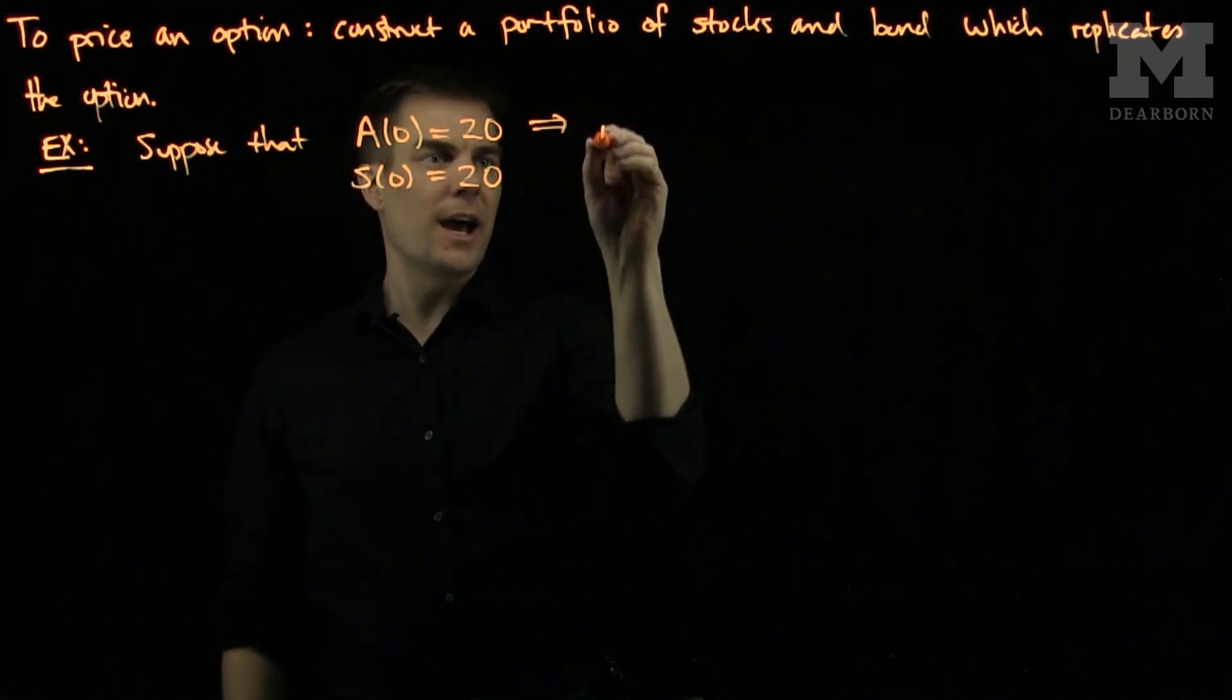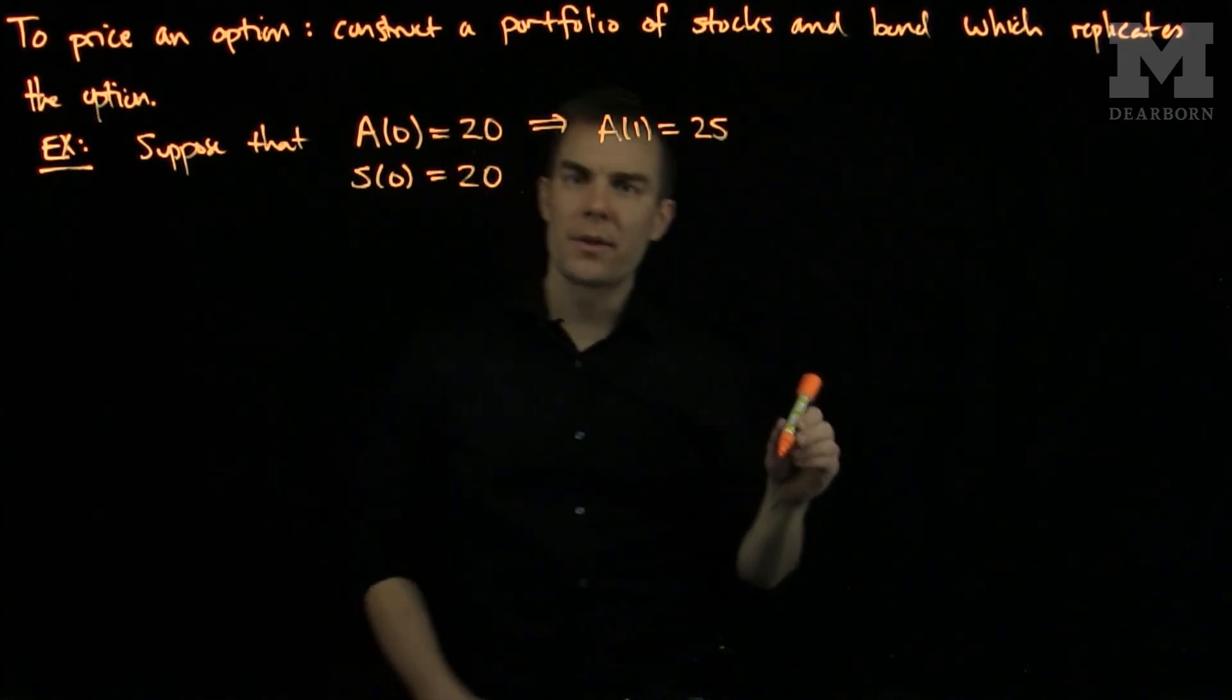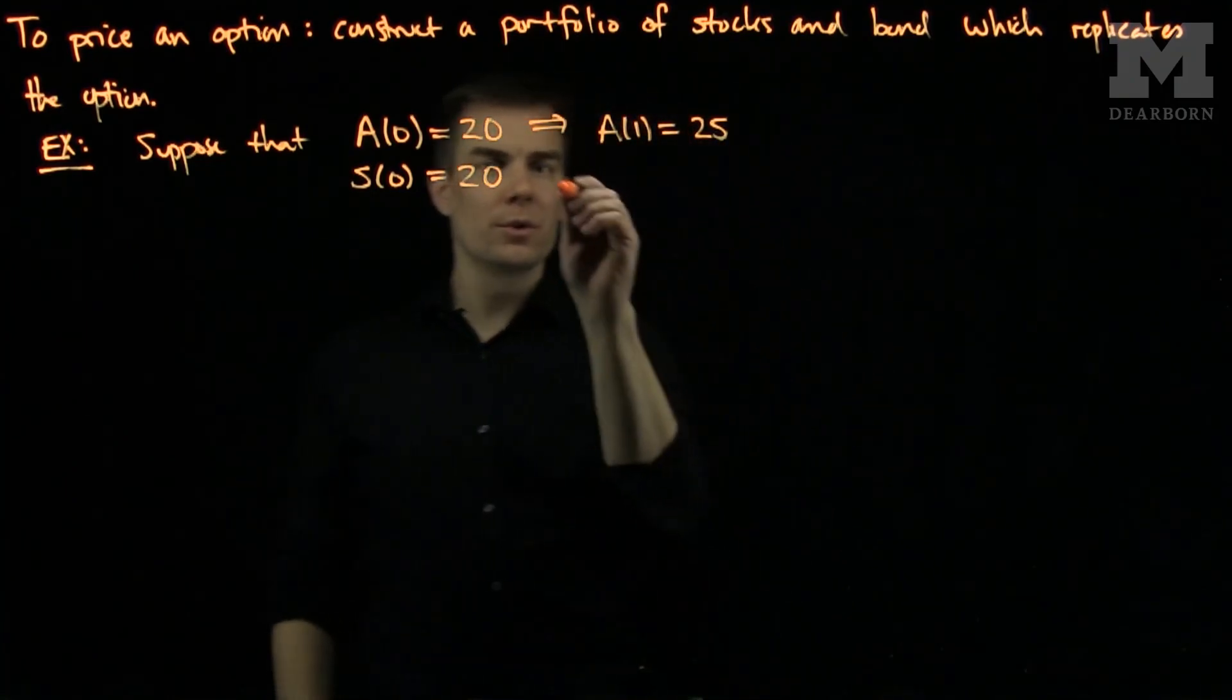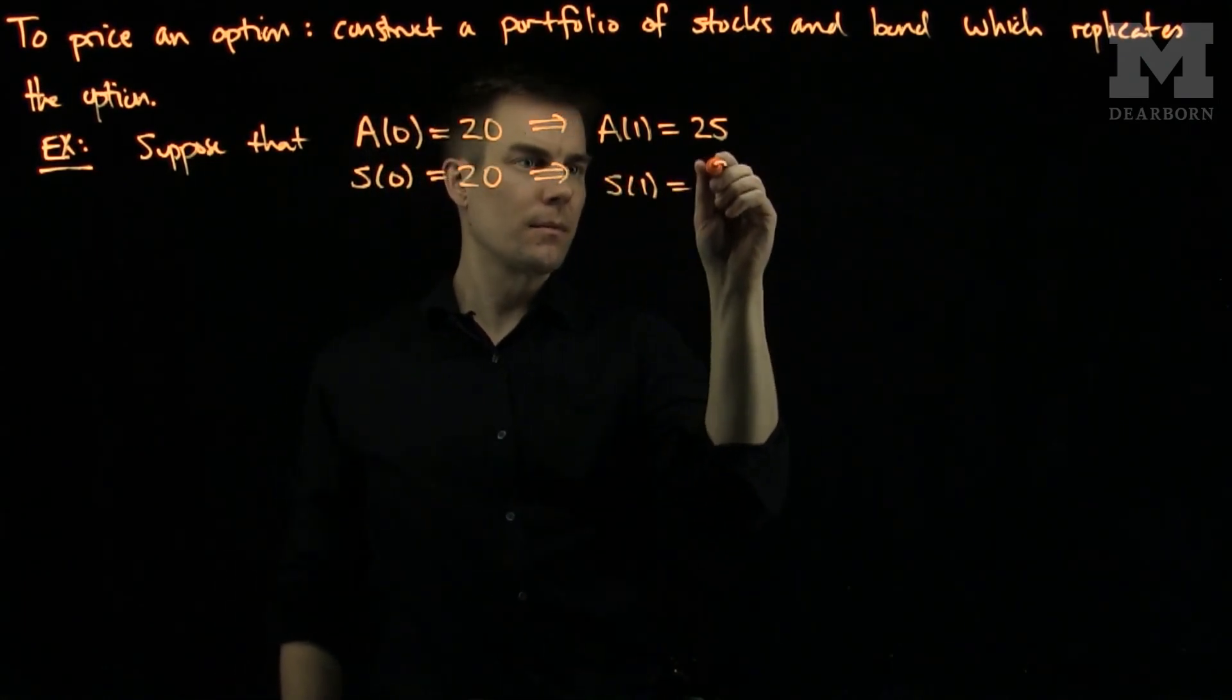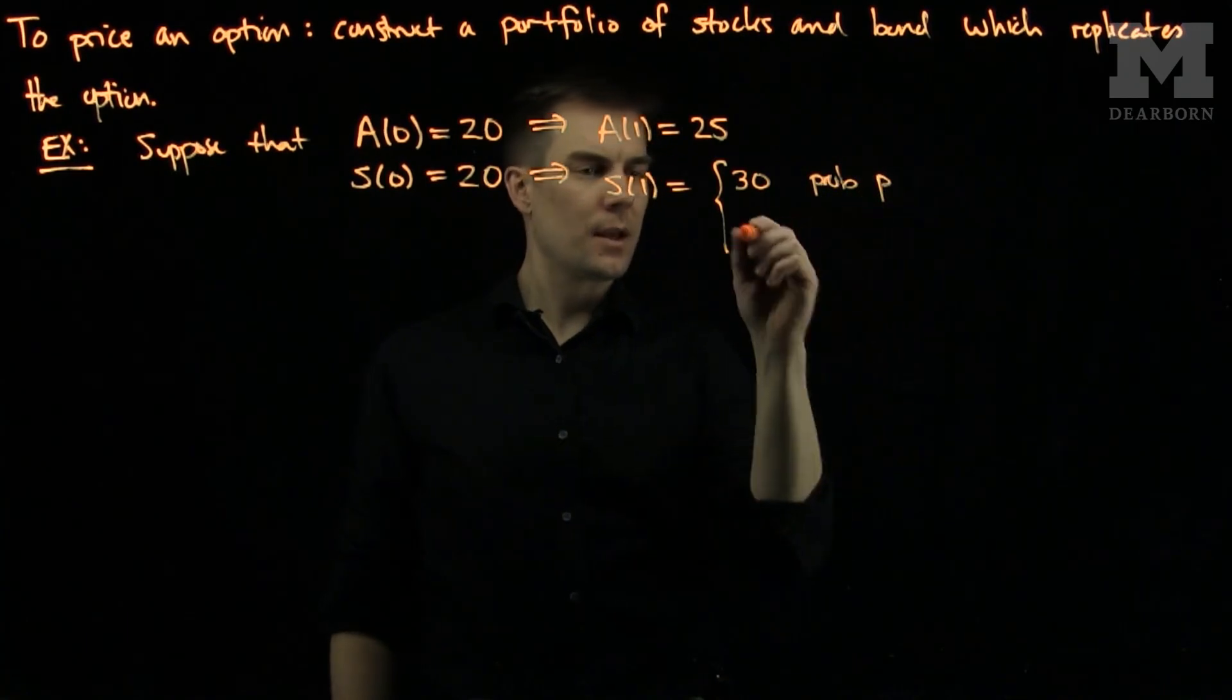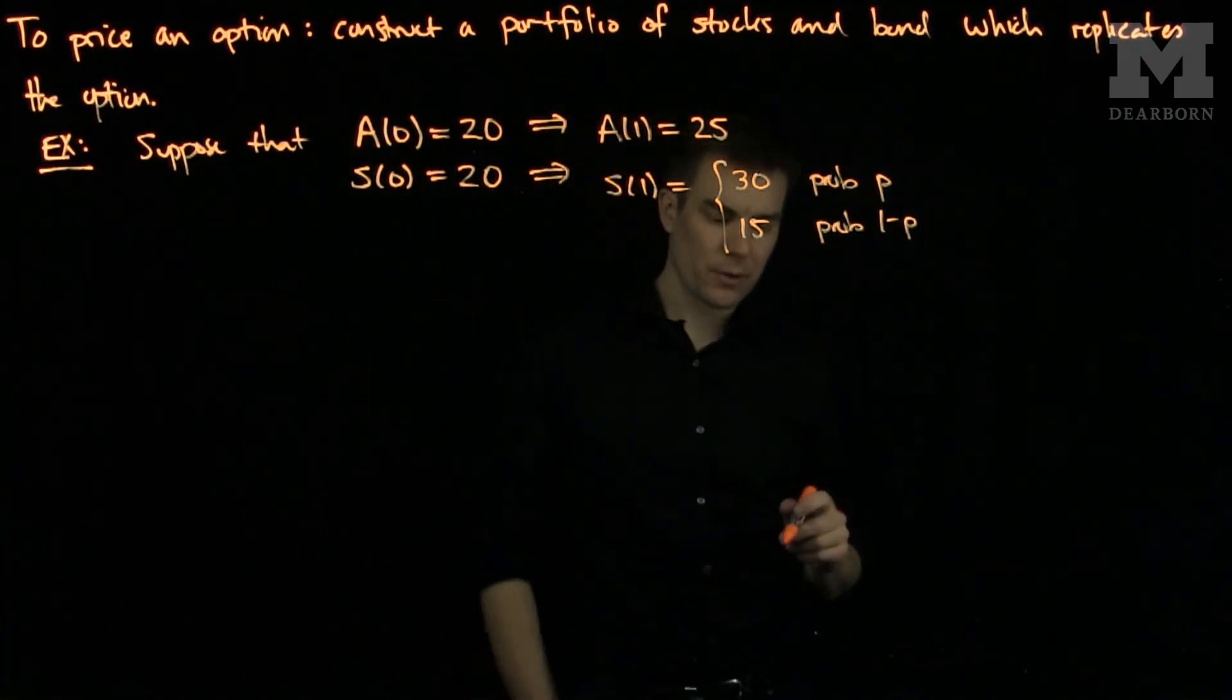And I will assume that after one year, the price of the bond is 25. And now we know by the arbitrage principle that the lower price of the stock and the upper price of the stock has to be sandwiched between 25. So what we'll do is we will assume that S is equal to 30 with probability P and 15 with probability 1 minus P. So we have a tree model for this probability.